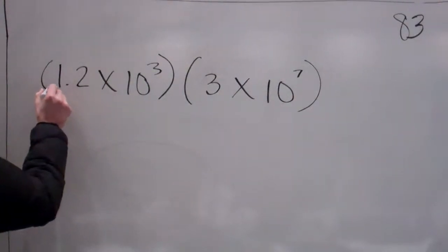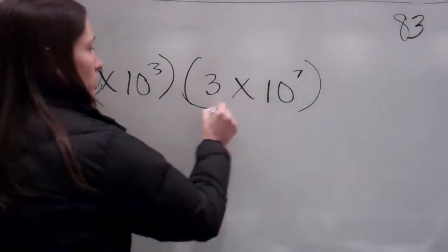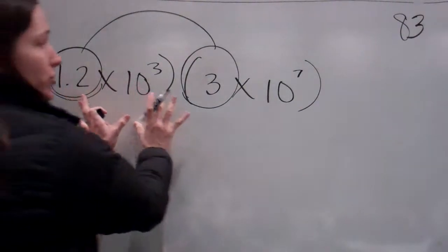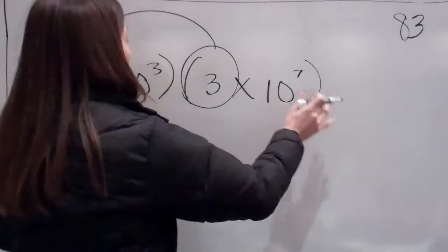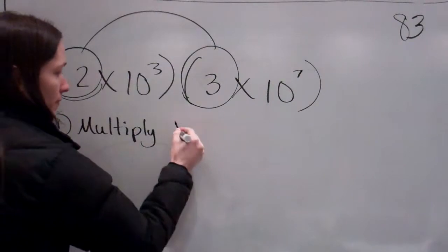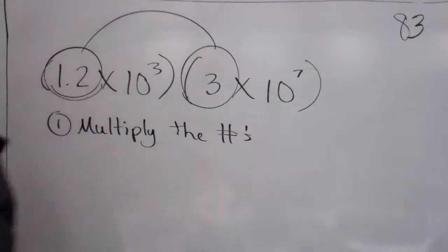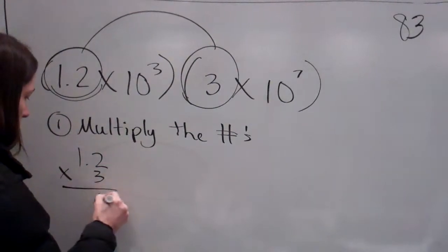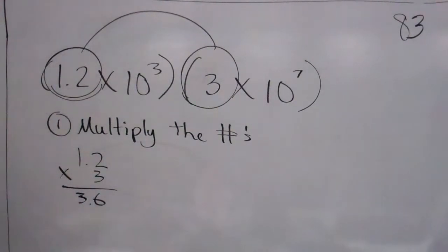What you're going to do is you're going to take your numbers, 1.2 and 3, and you're going to multiply them. So whenever you're doing scientific notation multiplication, you're going to, number 1, multiply the numbers. That's the first step. Multiply the numbers. So let's do that. The numbers are 1.2 and 3. So let's do 1.2 times 3, and we end up getting 3.6.